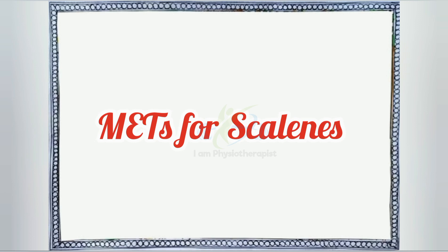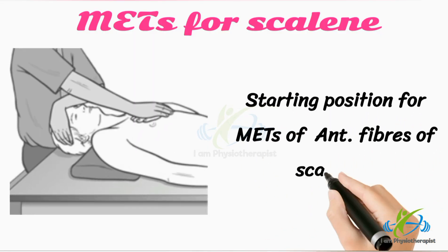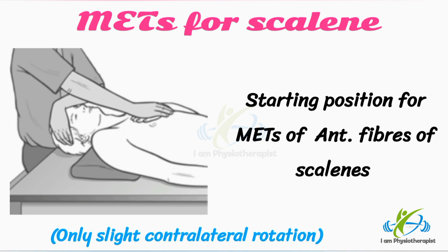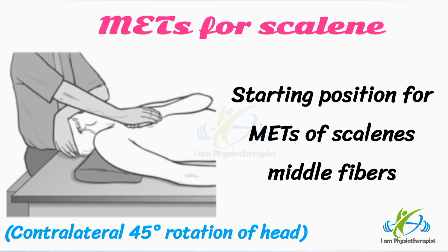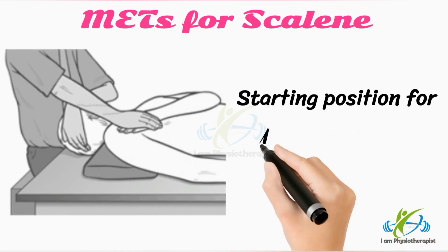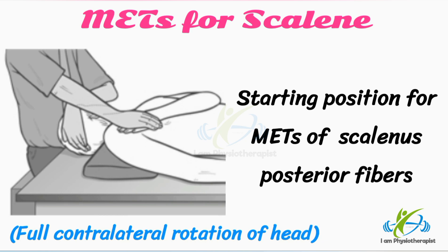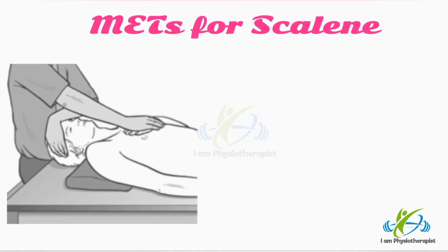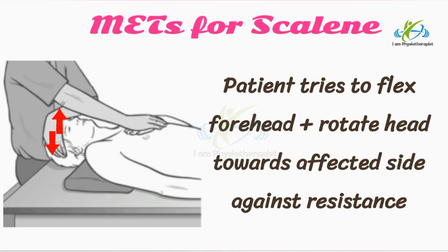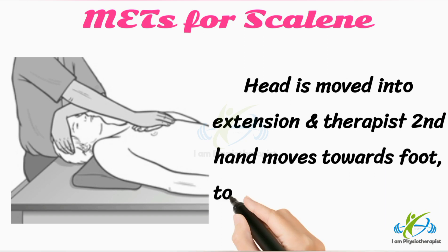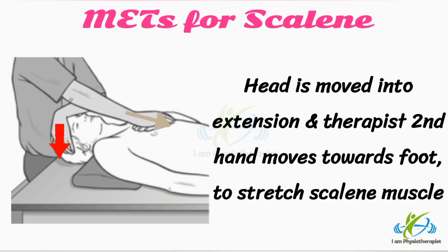Muscle energy technique for the scalene muscle: for the anterior fibers, only slight contralateral rotation is used as the starting position. For the middle fibers, 45 degrees of contralateral head rotation is used. For the posterior scalene, full contralateral rotation of the head is used. To perform the technique, move the patient's head and neck up to the first restriction barrier according to the scalene fibers being treated. The patient is asked to flex the forehead and attempt to rotate the head towards the affected side with appropriate breathing, while the practitioner's hand resists both movements. After isometric contraction, the head is placed into extension and the therapist's second hand moves towards the foot to stretch the scalene muscle.